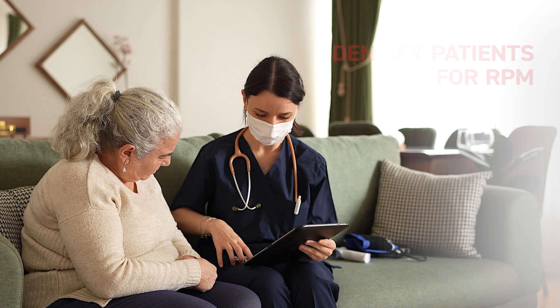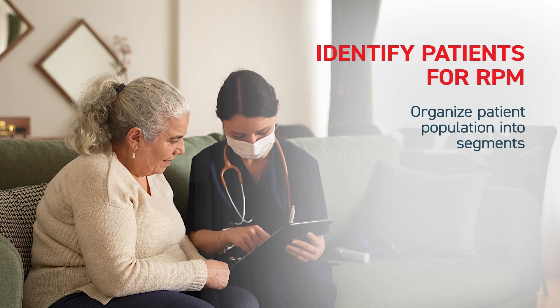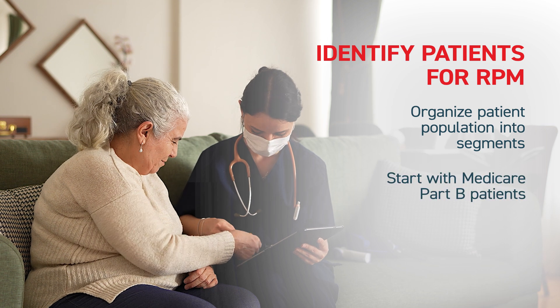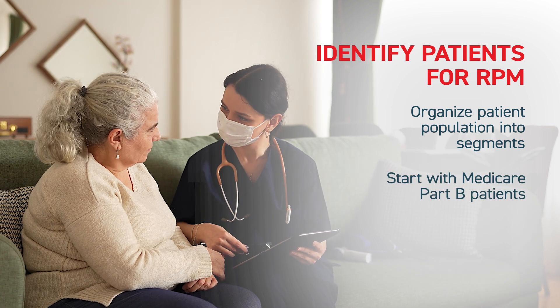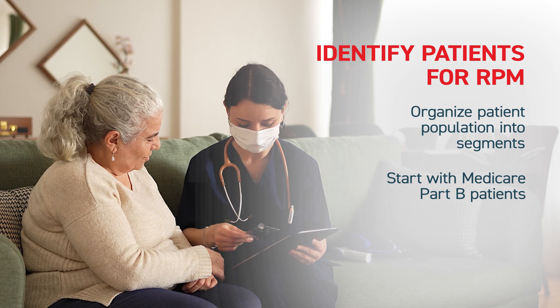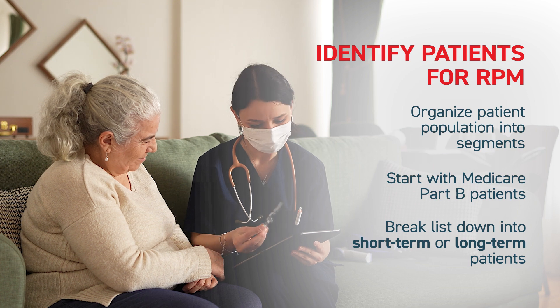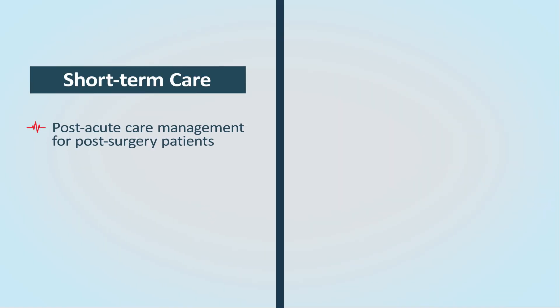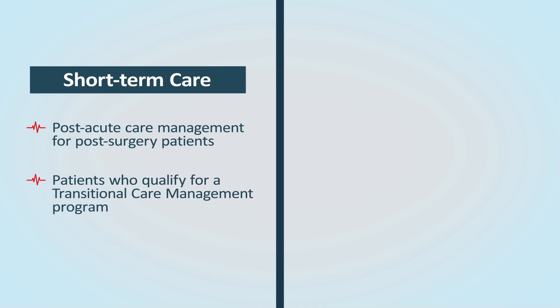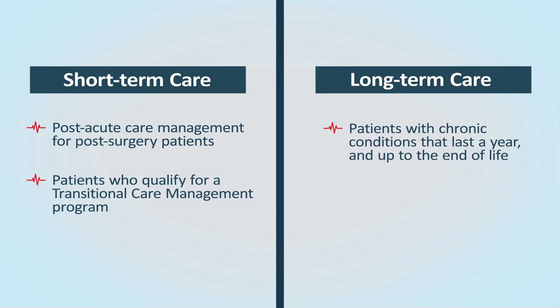Next, you'll want to identify and recruit patients. The best method for finding eligible patients for your RPM program is to organize your patient population into segments. Medicare Part B covers 80% of RPM costs nationwide, so you'll want to start with these patients. Commercial insurance and Medicare supplements may cover a percentage of the cost, with some secondary insurance covering the difference. Next, break your list down into short-term or long-term patients. Short-term care includes post-acute care management for post-surgery patients or those who qualify for the Transitional Care Management Program. Long-term care most commonly describes patients with chronic conditions that last at least a year and up to the end of life.